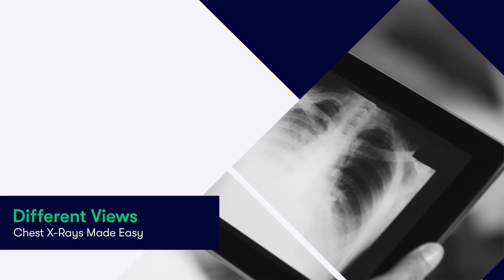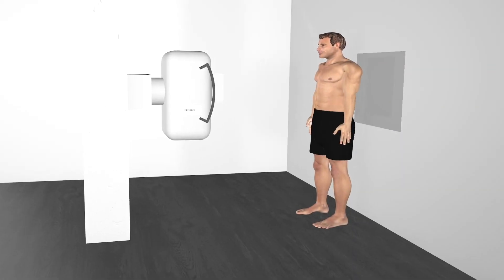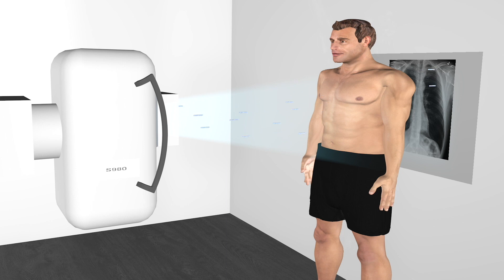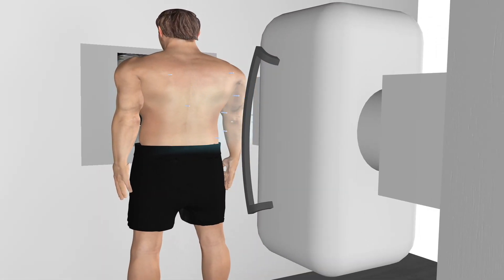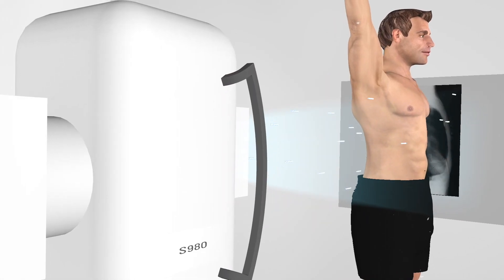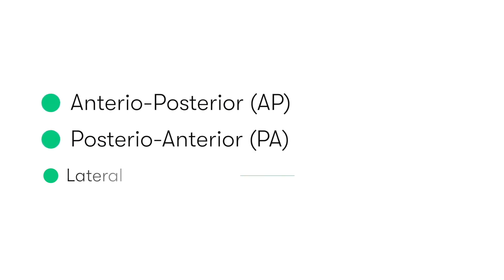When we perform chest x-rays, there are three views that we tend to use. Anterior posterior, or AP, which basically means the photon beams are fired from the patient's front through to their back. Then the reverse of that is the posterior anterior, or PA, in which the x-rays are beamed from the back of the patient through to their front. We can also perform a lateral view, or side-on view, which while still having limited use, has largely been superseded by other imaging modalities such as CT. So we're only going to focus on the more common AP and PA views for the rest of this talk.